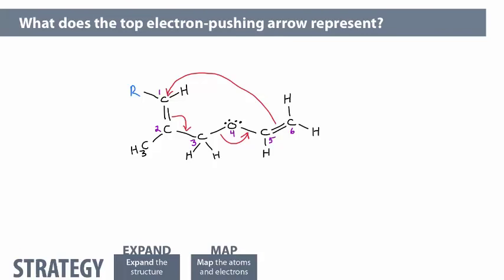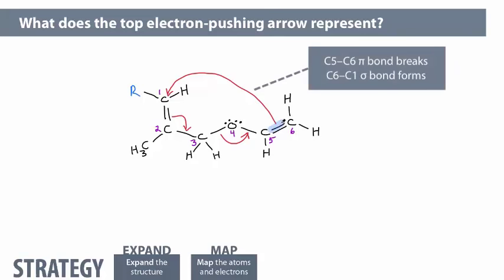The top arrow explains that the C5-C6 pi bond breaks as it makes a new C6-C1 bond. The leftmost arrow shows the C1-C2 pi electrons becoming a C2-C3 pi bond, and the C3-O4 bond breaks, making a new O4-C5 pi bond.